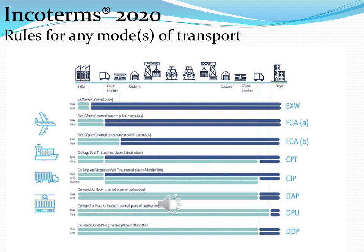The terms in Category 1 are: EXW or Ex-Works, FCA or Free Carrier, CPT or Carriage Paid To, CIP or Carriage and Insurance Paid To, DAP or Delivered at Place, DPU or Delivered at Place Unloaded, and DDP or Delivered Duty Paid.